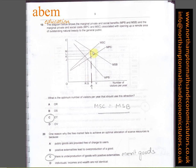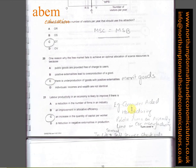In question number nineteen, at point OT, MSC is equal to MSB, which means the market has taken into consideration the externalities.